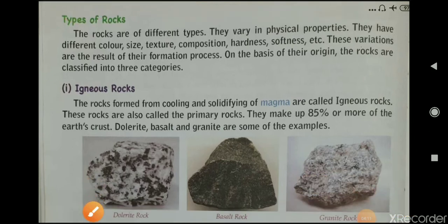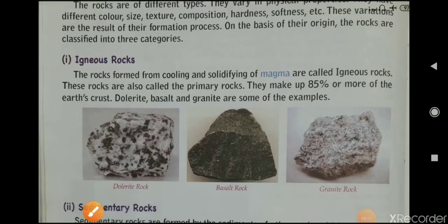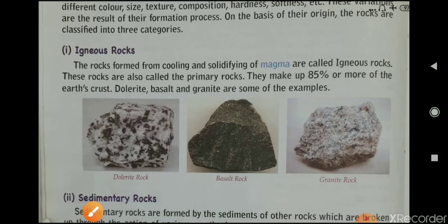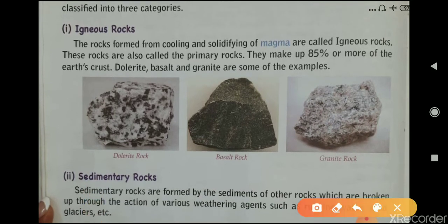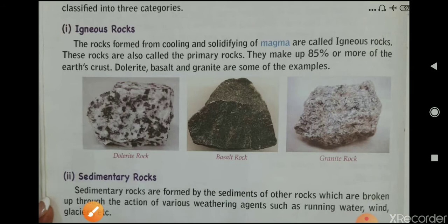There are three types of rocks. First is igneous rock — igneous rocks are formed from the cooling and solidifying of magma. When magma cools down and solidifies, the rocks formed are known as igneous rocks. Examples include granite, basalt, and dolomite.